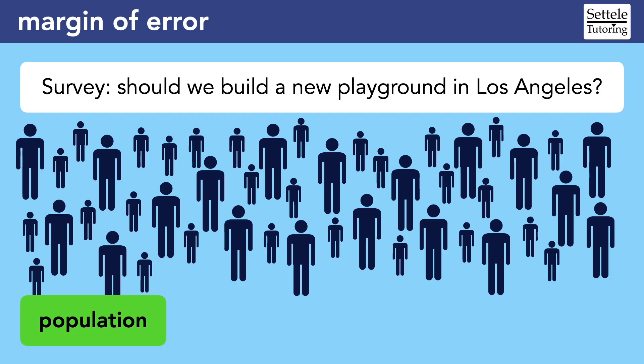This is known as the population, and it's the group that we're actually trying to measure. But since we can't ask everyone, we conduct a survey that asks just a smaller, random sample for their opinion. Let's say we found that 62% of the people in the sample support the new playground.